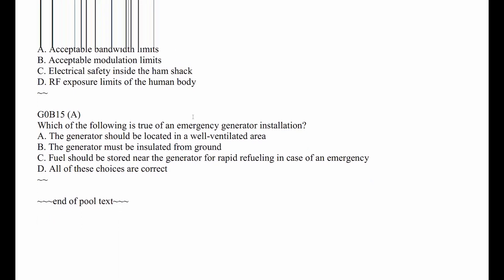G0B15: Which of the following is true of an emergency generator installation? It needs to be in a well-ventilated area, away from the house. Carbon monoxide kills people every year — they start up the generator in the kitchen when it snows, and they're dead.